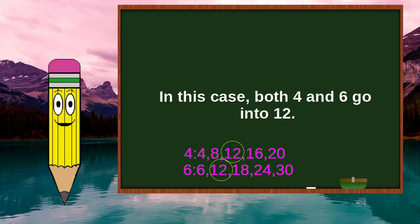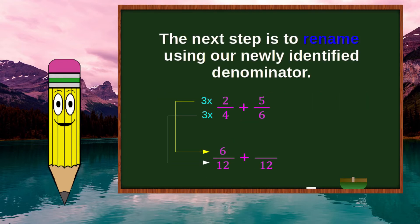In this case, both 4 and 6 go into 12. The next step is to rename using our newly identified denominator.